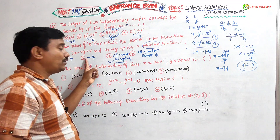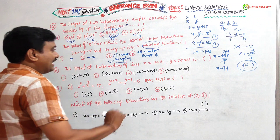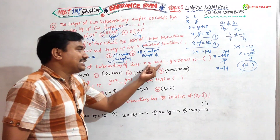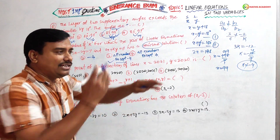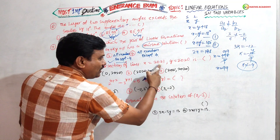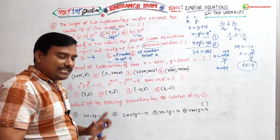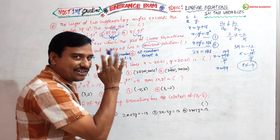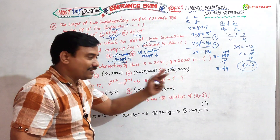Next: the point of intersection of lines x = 2021 and y = 2020 — where are they intersecting? Simple: the ordered pair is (2021, 2020). That is the point of intersection on the graph. Remember this ordered pair.